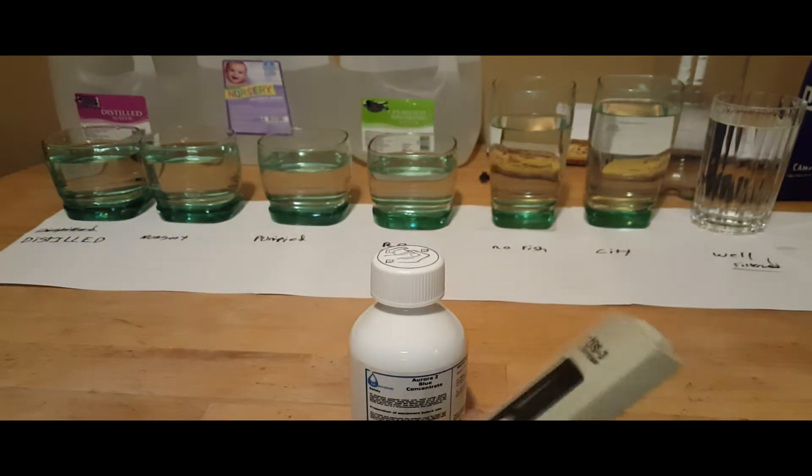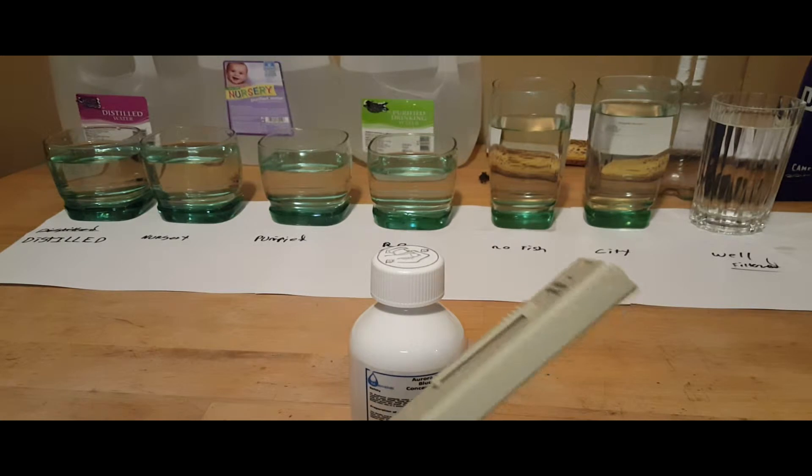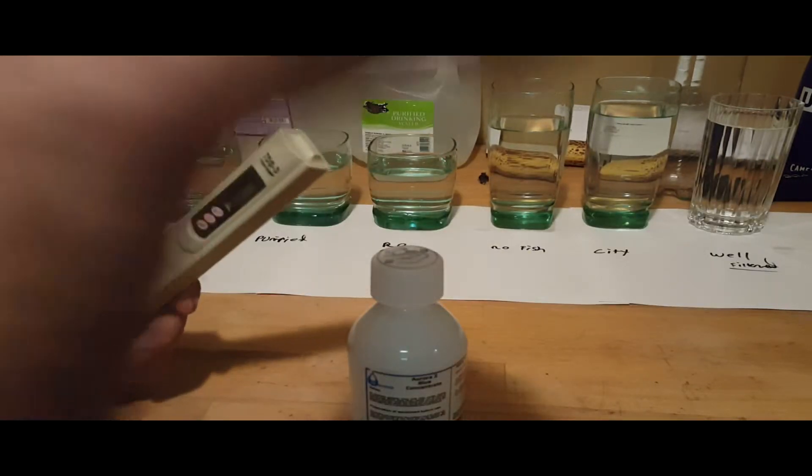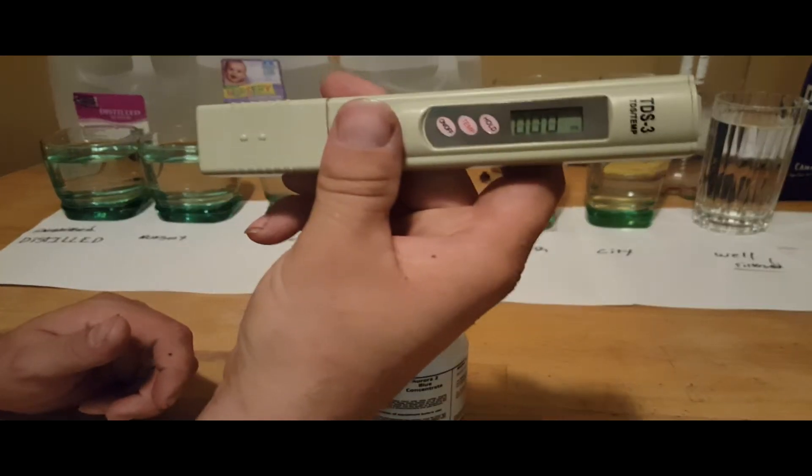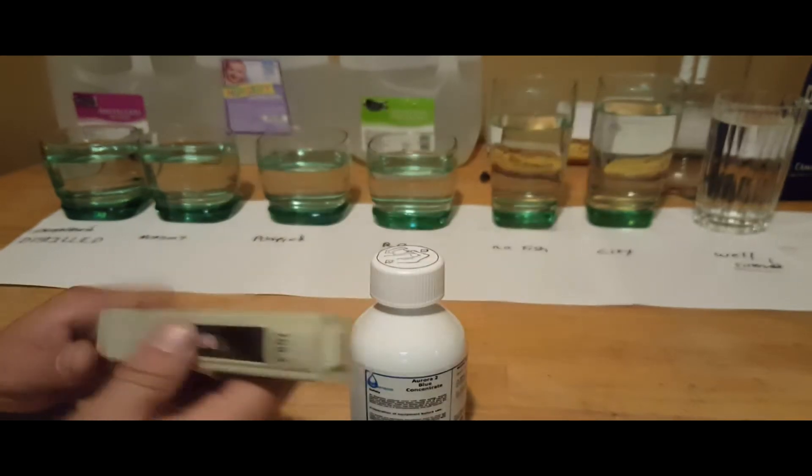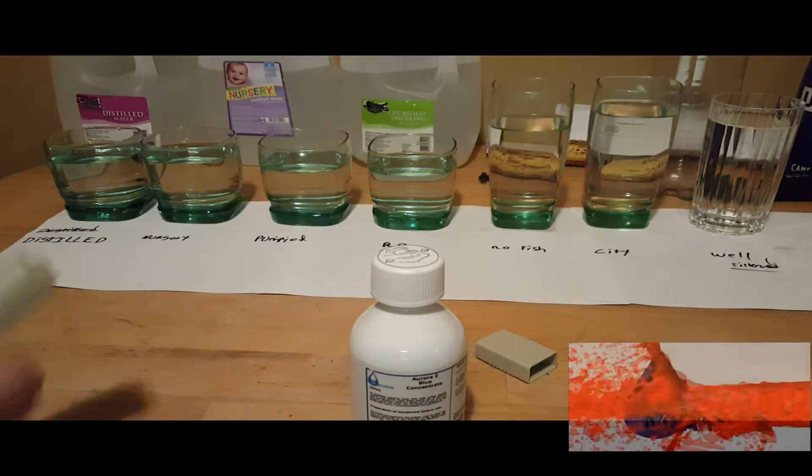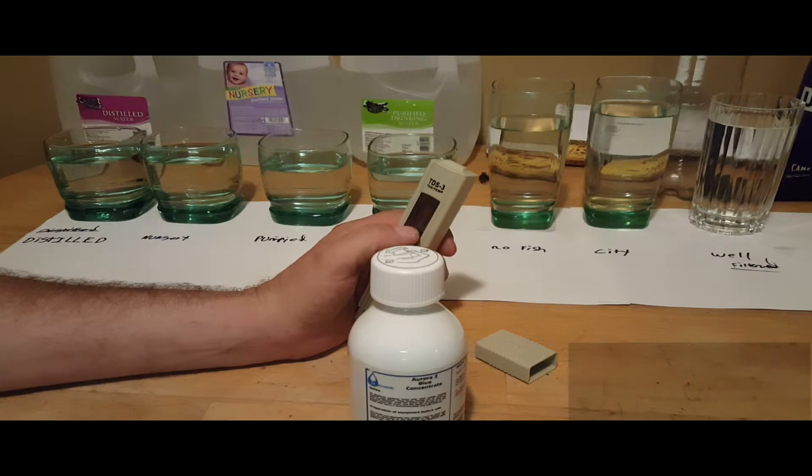So this is what's called a TDS meter. You can get these at your local fish store, tropical fish stores, or reef aquarium stores. I got this on eBay for like three bucks. Mayhem sells them too, I'll put the link down below. You just turn it on like that and as you see it's reading 0.00, which means it's good.